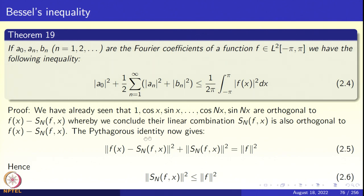Because f(x) minus Sn(f) is orthogonal to Sn(f), I can apply Pythagoras's theorem. So the norm of this squared plus the norm of this squared equals the norm squared of the sum f, and the norm squared of f is obtained. We simply knock off the first piece and conclude that the L2 norm of Sn(f) is less than or equal to the L2 norm of f — that is basically Bessel's inequality.